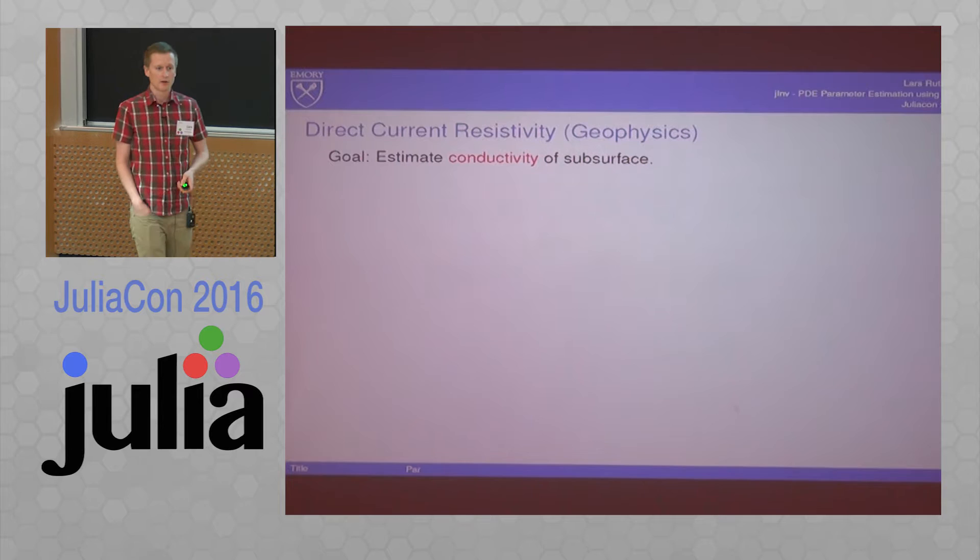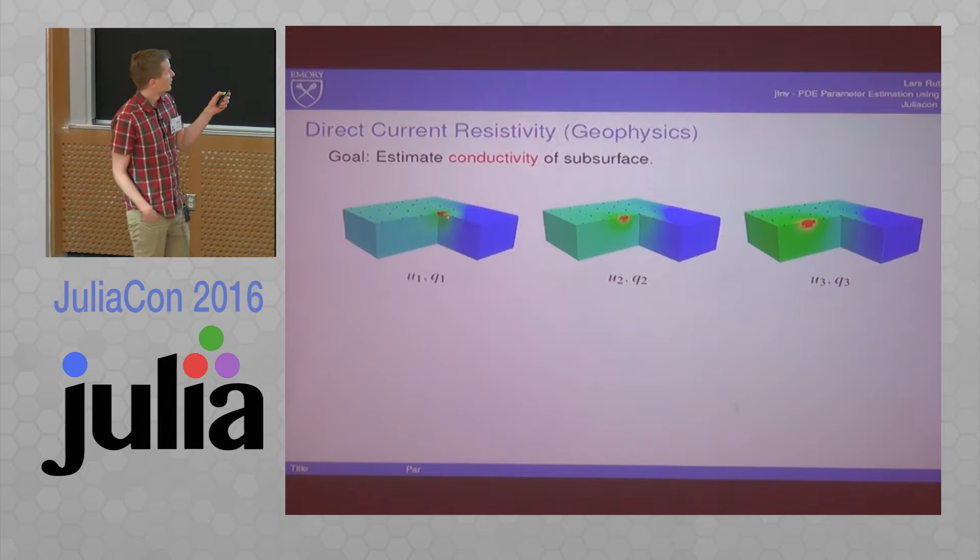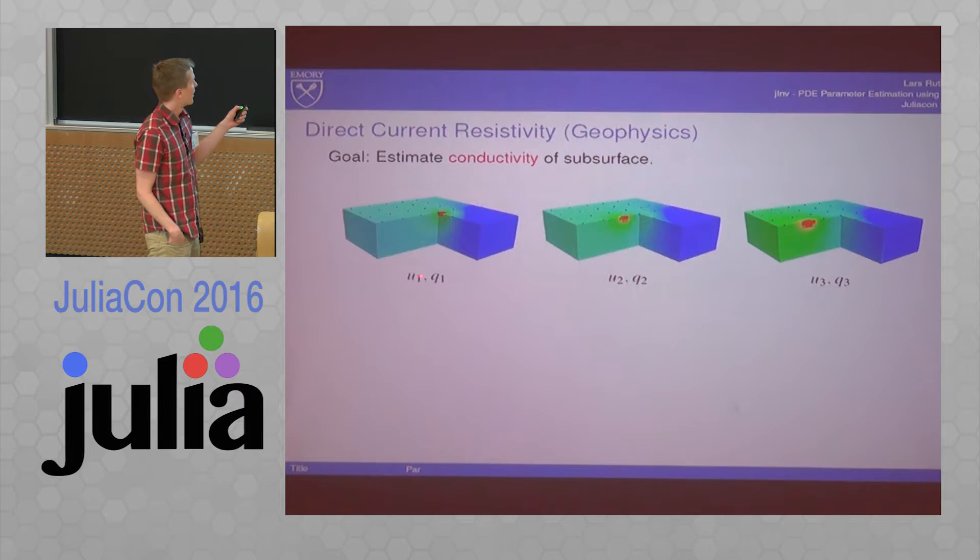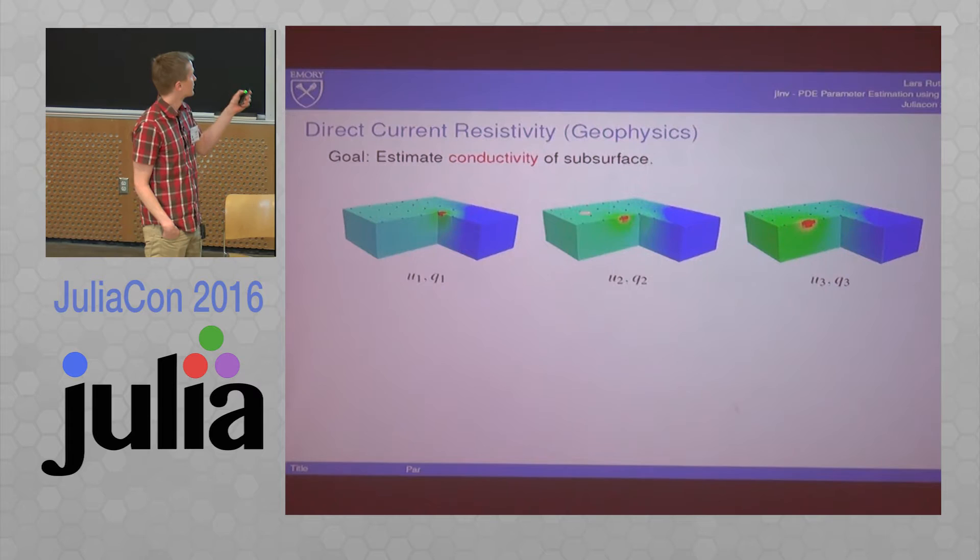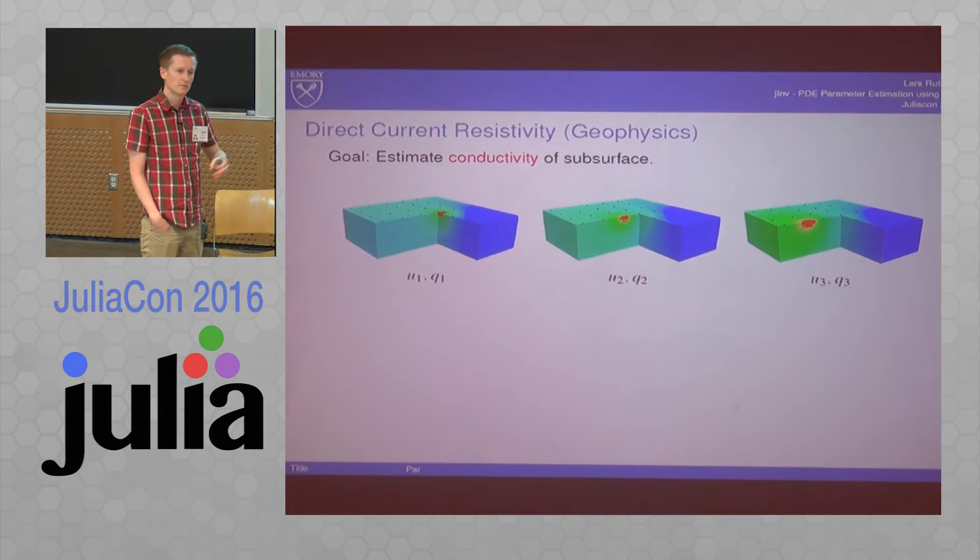So how do you do that without digging a hole? One thing you can do is electric measurements. You can introduce some electric current and simulate or measure the magnetic field on the surface. If you put the source in different locations, you would get different fields, and the field is also going to be dependent on the conductivity in the ground.